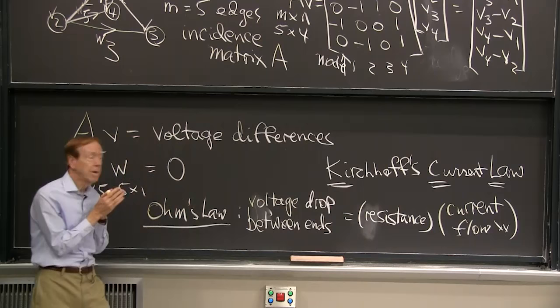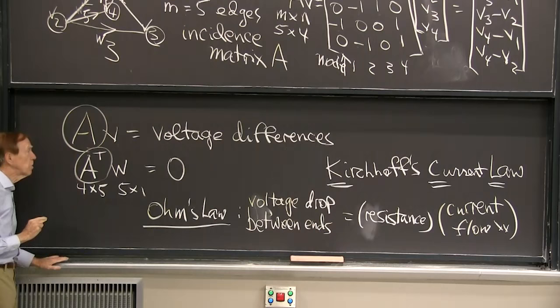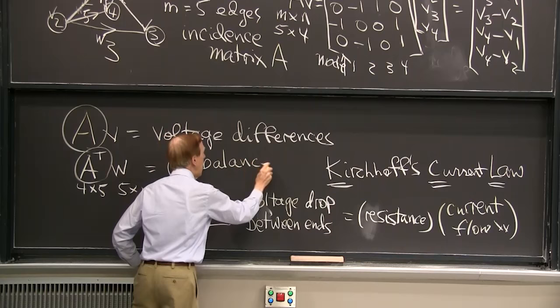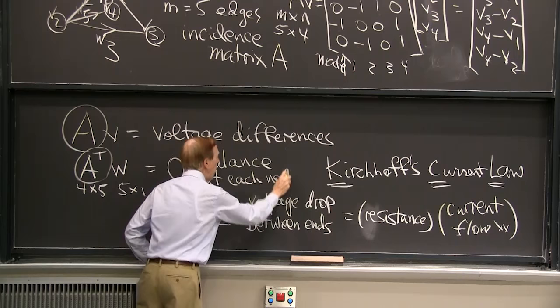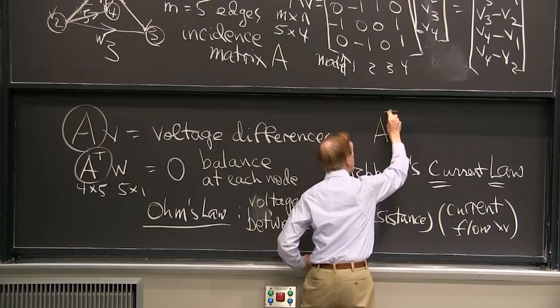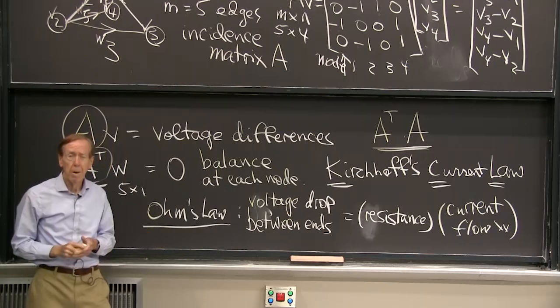And maybe I'll just make the main point here. The main point is that this matrix is crucial. A is crucial. Well, A transpose is crucial. A gives voltage differences that make something happen. A transpose is the balance law, the current balance at each node. And you won't be surprised that when the whole thing is put together and we have a final equation to solve, we end up with A transpose and A. And that magic combination A transpose A is central to graph theory. It's called the graph Laplacian and has a name and a fame of its own. Thank you.